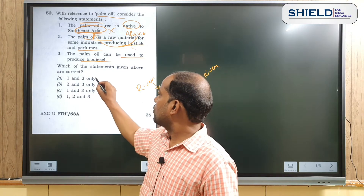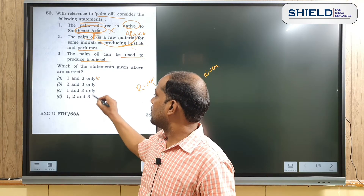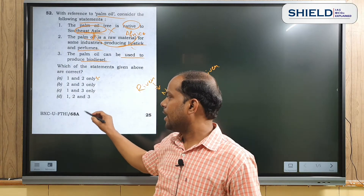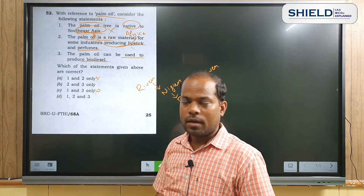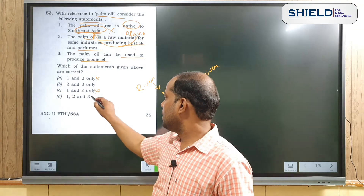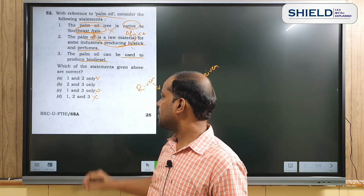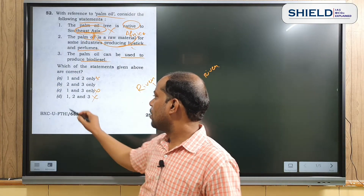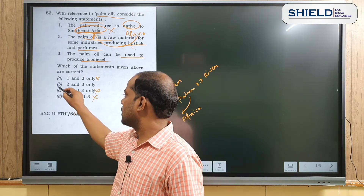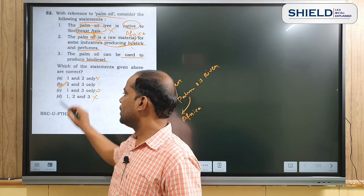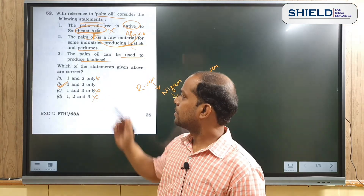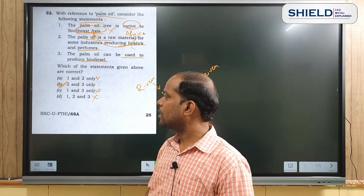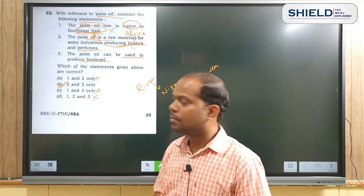Since Statement 1 is incorrect, we can eliminate options A, C, and D. The correct answer to question number 52 is option B.